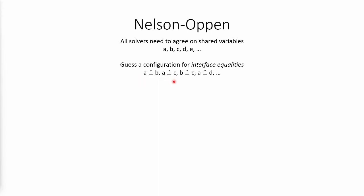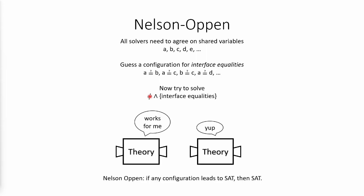Now that we have a configuration, we're going to test that together at the same time with the formula that we're trying to prove. And Nelson-Oppen says that if we can find any configuration where all the theory solvers agree about, it means that our original formula is also true.